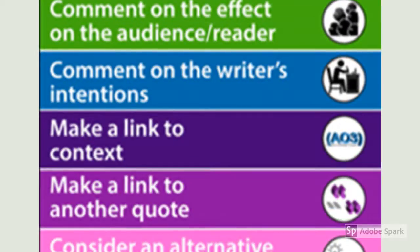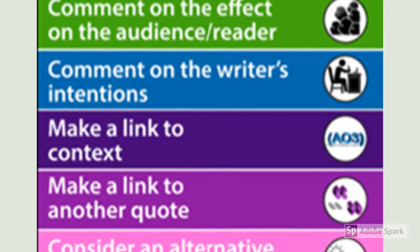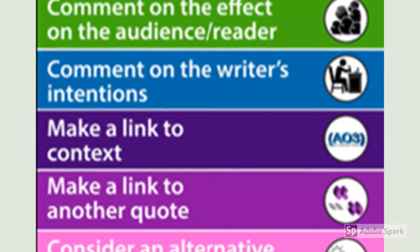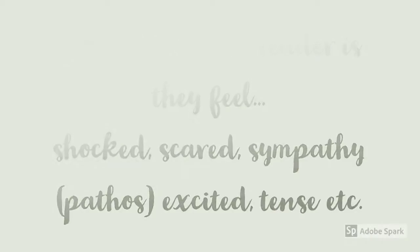The next strategy is definitely one to use when you are struggling to develop your reading response, because this is something that an examiner cannot argue with — it is commenting on the effect on the audience or the reader, which is yourself. You would start your sentence by saying 'the effect on the reader is, they feel...' and then put in your answer. That could be shocked, scared, sympathy or pathos, excited, tense, and so on.